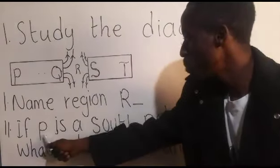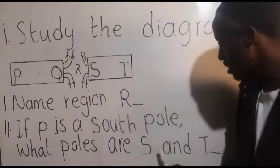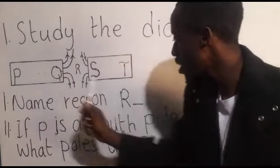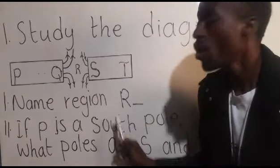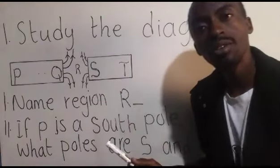Question two is saying if P is a south pole, what poles are S and T? Now they are saying if P here is south pole, what would be for S and T?